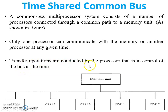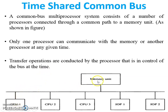Transfer operations are conducted by the processor that is in control of the bus at the time. As per our example, CPU 1 accesses the bus — it means a data transfer process, or we can say a read/write operation inside the memory unit, is performed by CPU 1 only. The remaining processors will be in waiting mode.